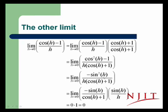The denominator stays the same. We'll break up this numerator into a piece with just sine h over h, and what's left is another sine h over the cosine h plus 1.